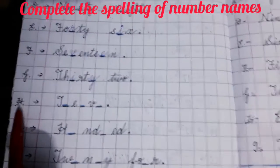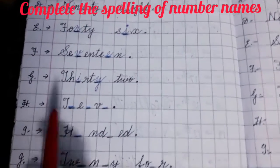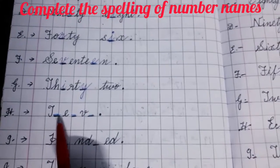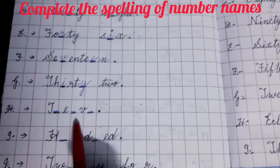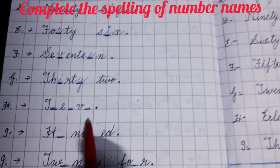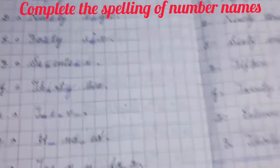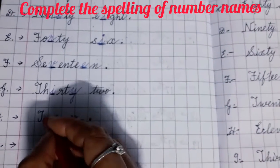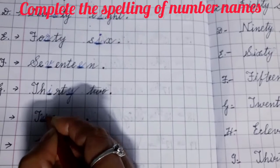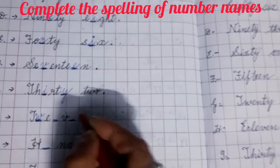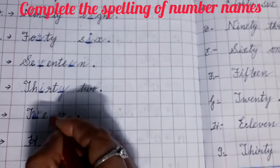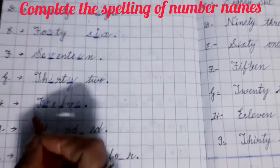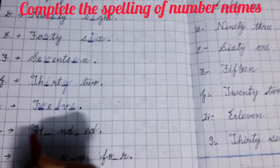After leaving one row, write H and put an arrow. Write T blank space E blank space V blank space N. This is the spelling of 12 — TWELVE. T is already written, what you will fill? W. E is written, what you will fill? L. V is written, what you will fill? E. T W E L V E — 12.